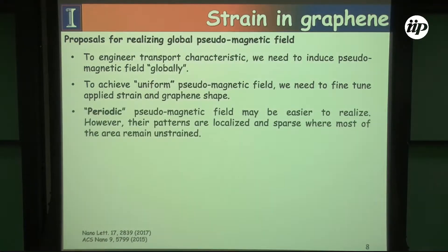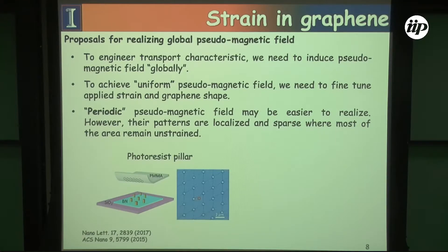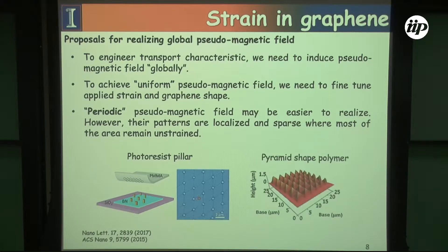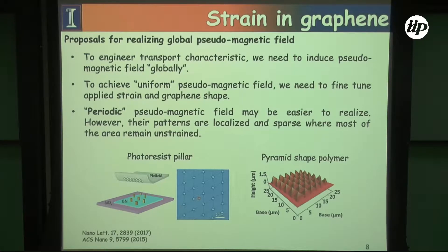A different approach is to generate a pseudo-magnetic field using patterned substrates — things like photopillar resists or polymers. But in both cases, the lattice constant is going to be relatively large compared to graphene, so there are going to be large periods of the graphene that remain unstrained. So this is maybe not the best approach.